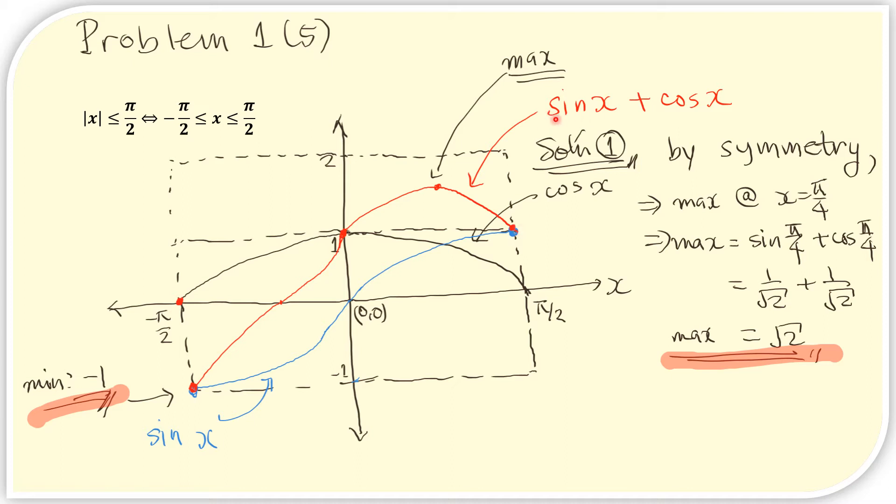Now we can try to predict the graph of sin x + cos x. At the endpoint, at this endpoint, cos x is 0 and sin x is -1. So sin x + cos x, which is the red plot, would be here at -1.